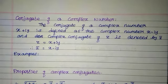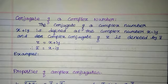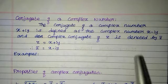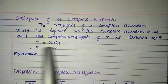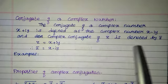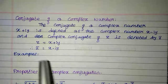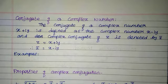Conjugate of a complex number. The conjugate of a complex number x plus iy is defined as the complex number x minus iy, and the complex conjugate of z is denoted by z bar. That is, if z equals x plus iy, then z bar equals x minus iy.